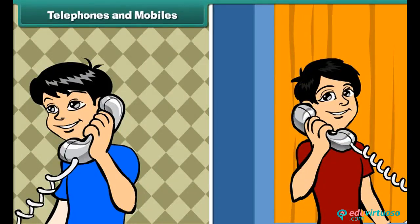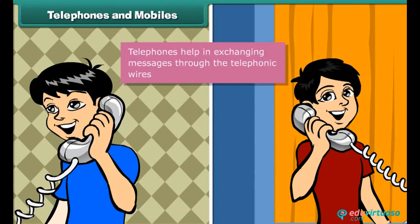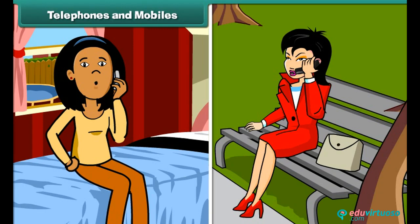Rick is talking with his friend Sam. He is using a telephone. Telephones help in exchanging messages through telephonic wires. We can talk to any person at any place using telephones. We all know that mobile phones have replaced the telephone. A mobile phone can be carried everywhere and is more useful than a telephone.